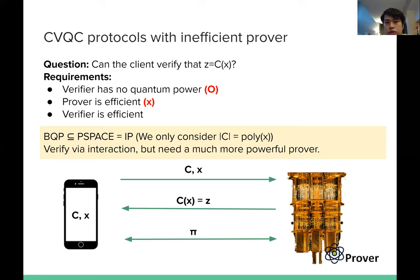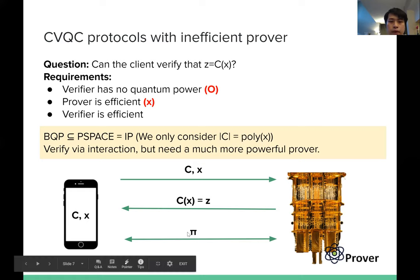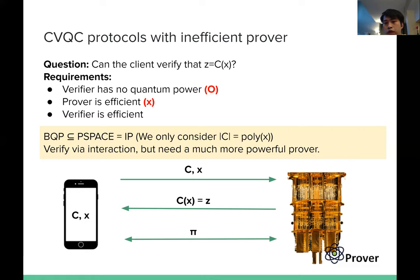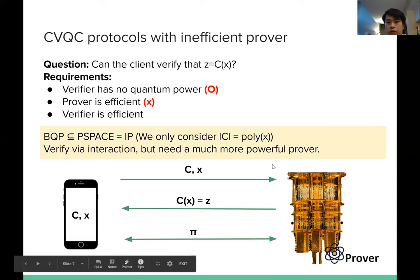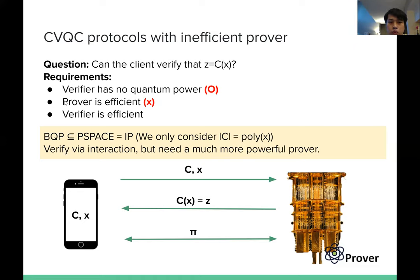The first approach is: suppose I just want to compute some circuit C which is in BQP. Then, because BQP is in PSPACE which equals IP (interactive proof), there exists an IP protocol to help you verify the answer of C of X. This sounds good, but in the IP protocol, the prover is always an all-powerful prover, so the prover in this protocol may not be efficient. This doesn't satisfy the second requirement that we want the prover to be efficient.